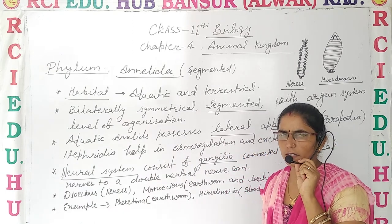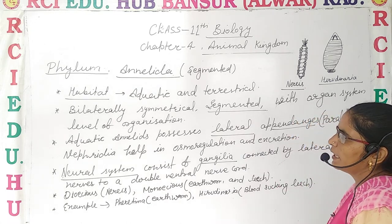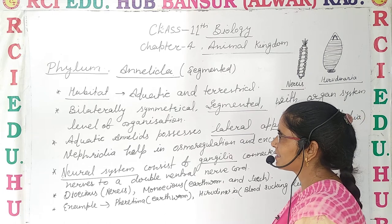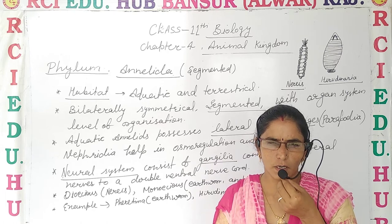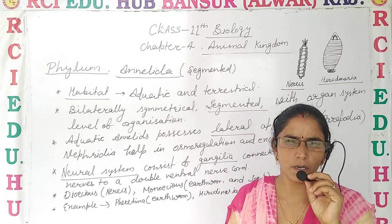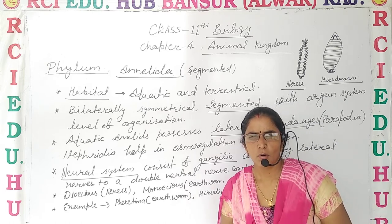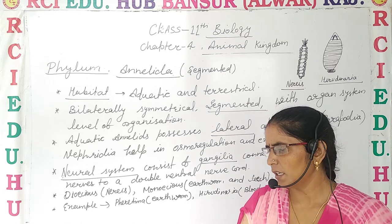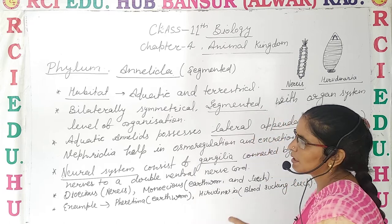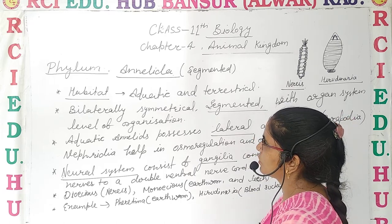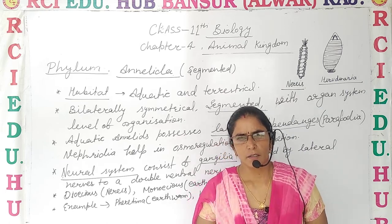Let's continue to the next phylum of chapter number 4, Animal Kingdom — Annelida. As the name suggests, Annelida have a segmented body, meaning the body appears to be divided into several segments consisting of small ring-like structures. This is the peculiar feature of Annelida.